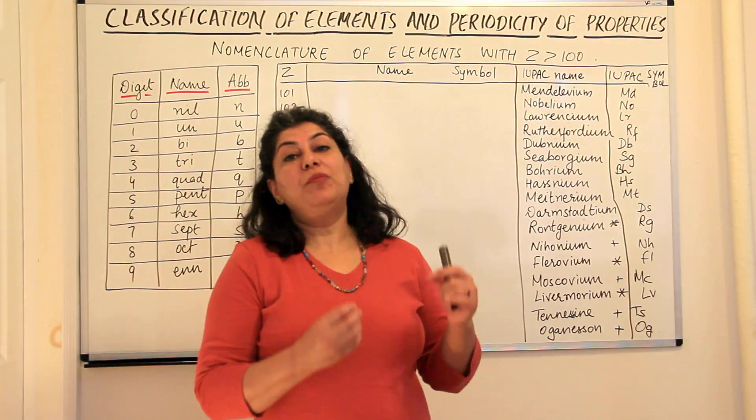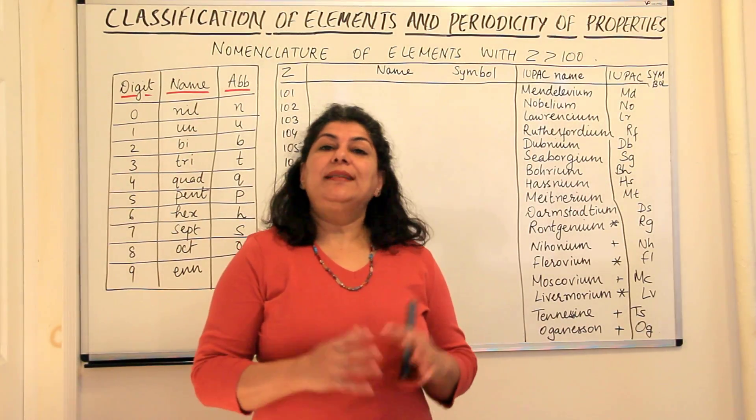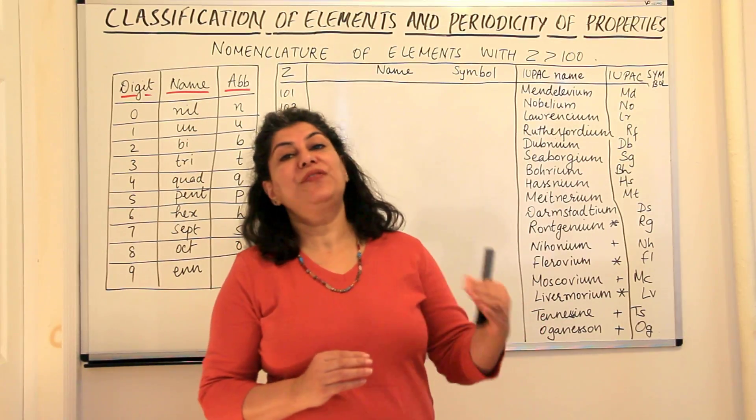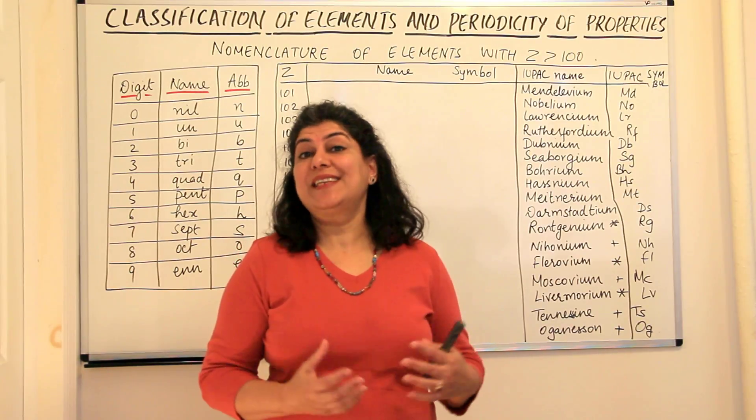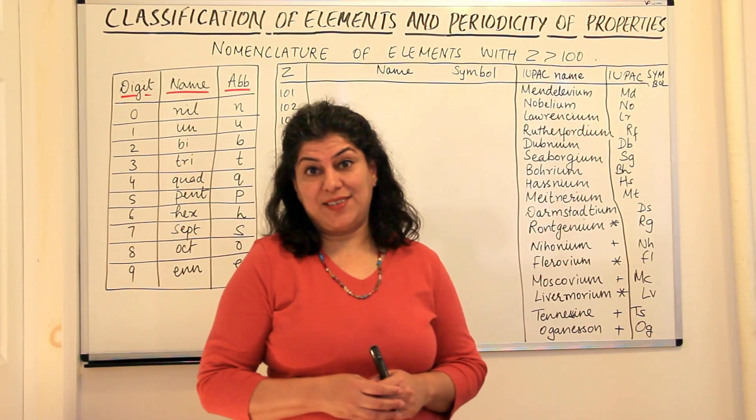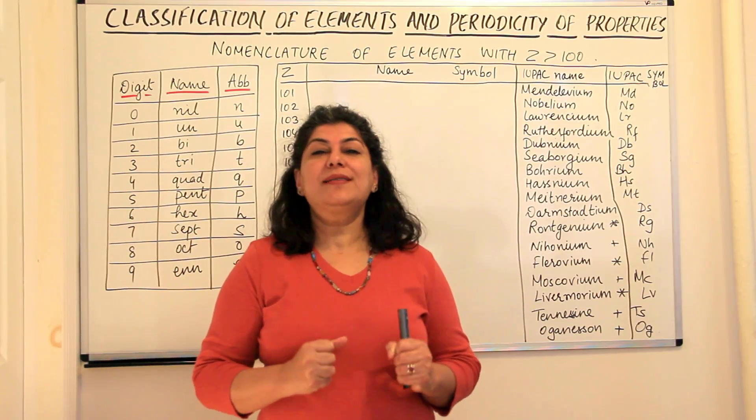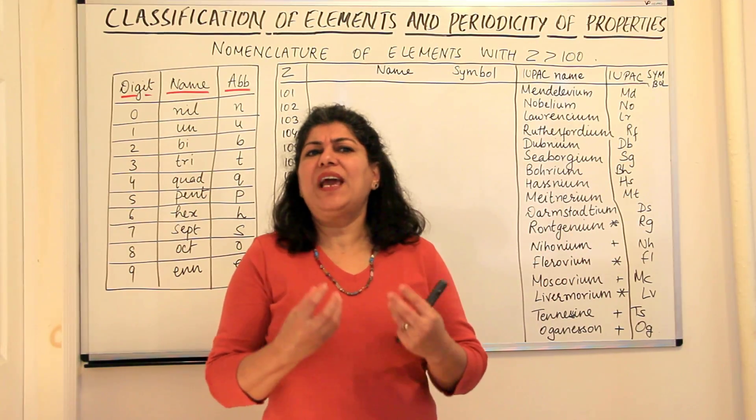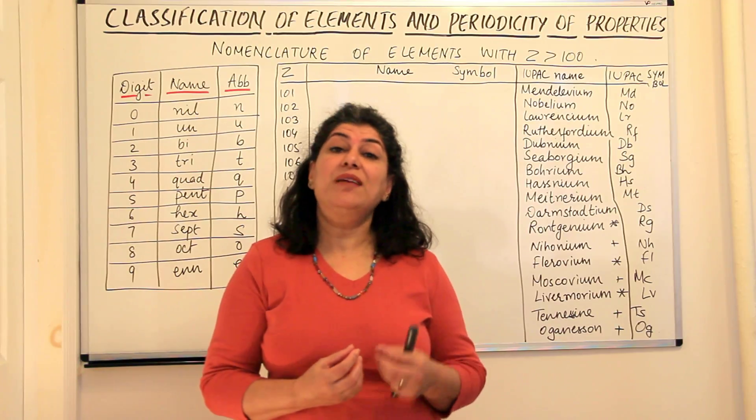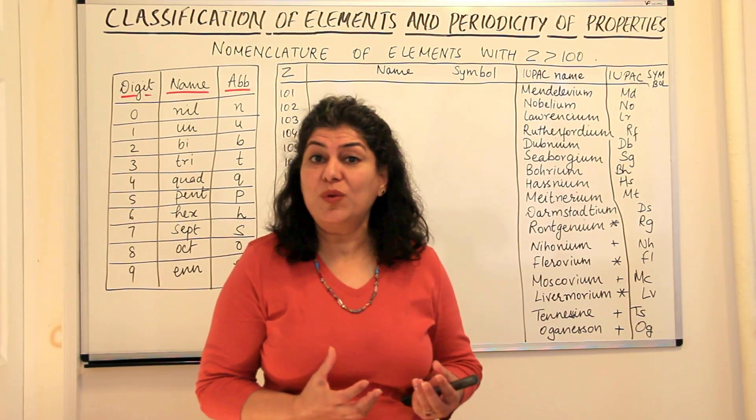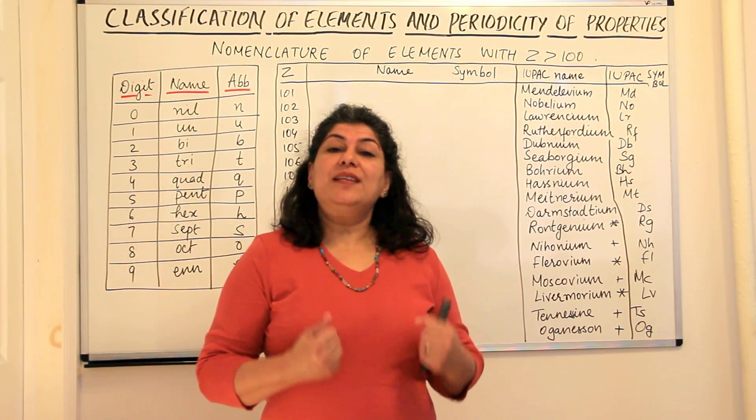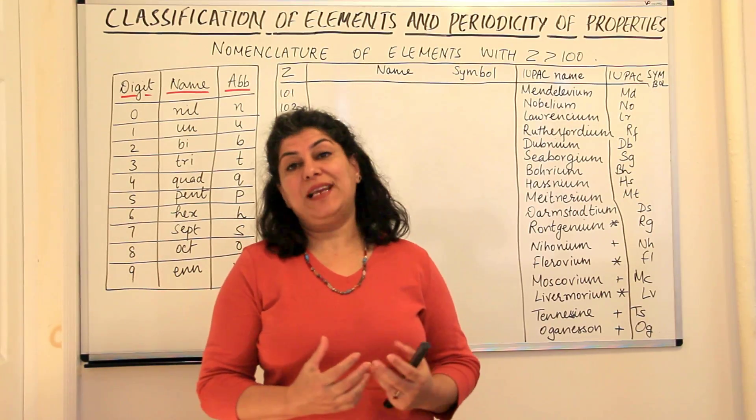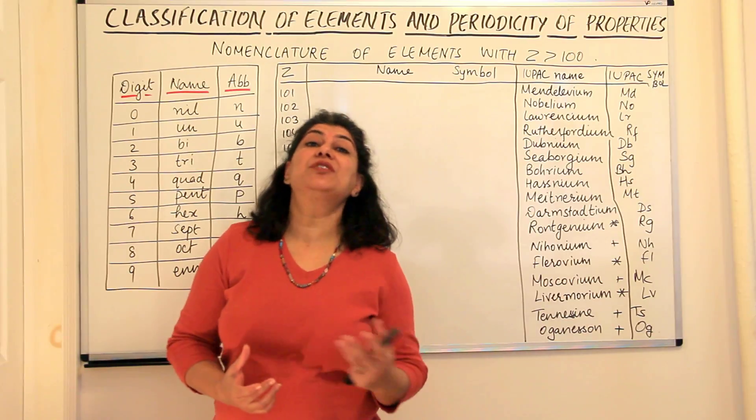Before I come to the actual modern periodic table, it's important to know that there were 94 naturally occurring elements and beyond these the elements have artificially been prepared or some elements are still being discovered by scientists. It requires a lot of effort for elements beyond the atomic number hundred and even if they have been obtained, they've been obtained in traces, sometimes just a few atoms of an element may be discovered or may be prepared.